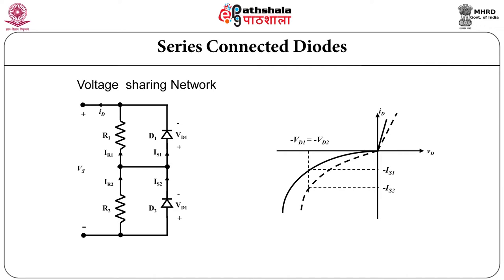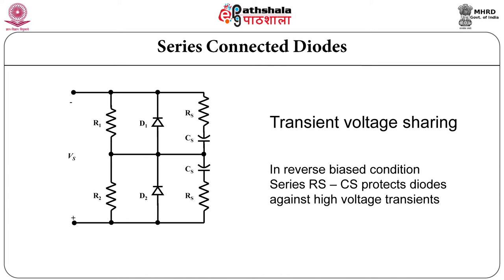But this is only sufficient for static conditions. In case of transient conditions this circuit may fail because there will be no equal voltage sharing, due to the differences in reverse recovery time of the diodes. Therefore we can use the series RC combination connected in shunt across each diode. If a transient comes, it will bypass through the capacitor because the capacitor will show very low reactance to that transient, protecting the diode.